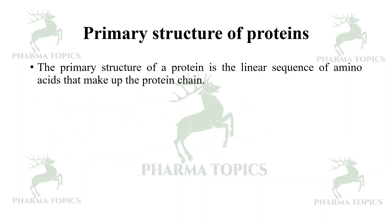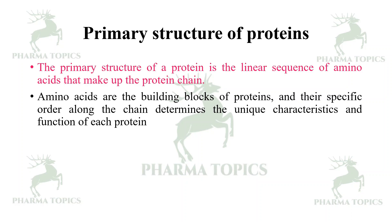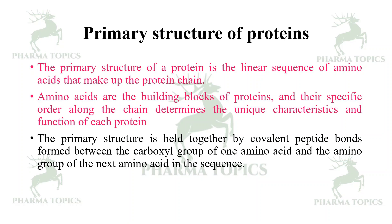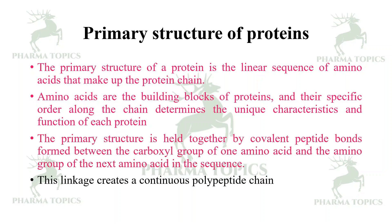The primary structure of a protein is the linear sequence of amino acids that make up the protein chain. Amino acids are the building blocks of proteins and their specific order determines the unique characteristics and function of each protein. The primary structure is held together by covalent peptide bonds formed between the carboxyl group of one amino acid and the amino group of the next, creating a continuous polypeptide chain.